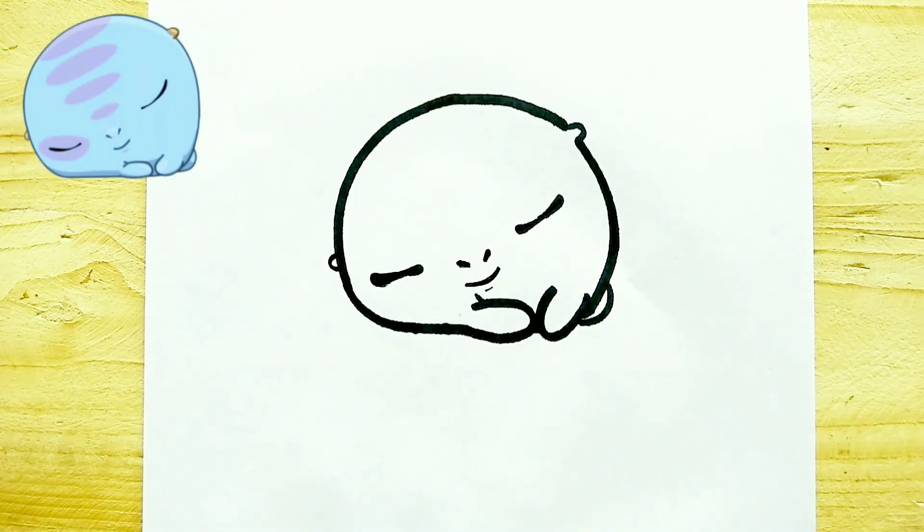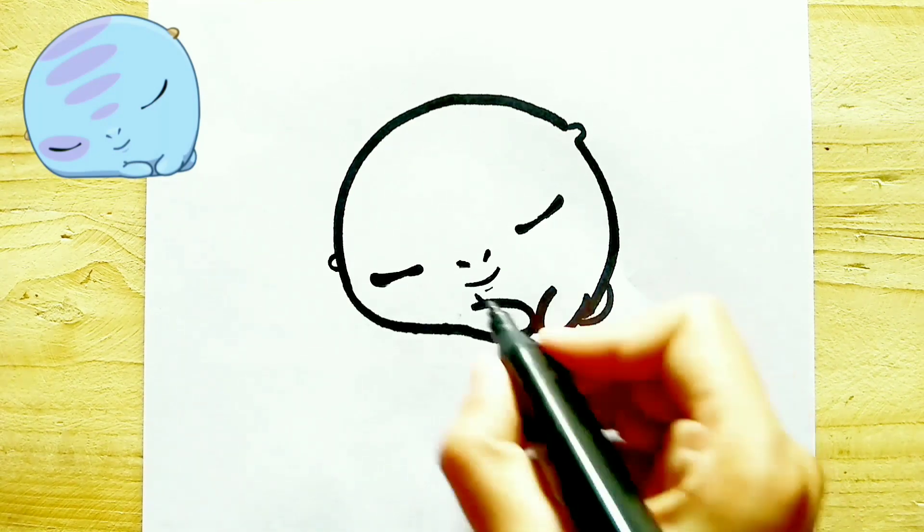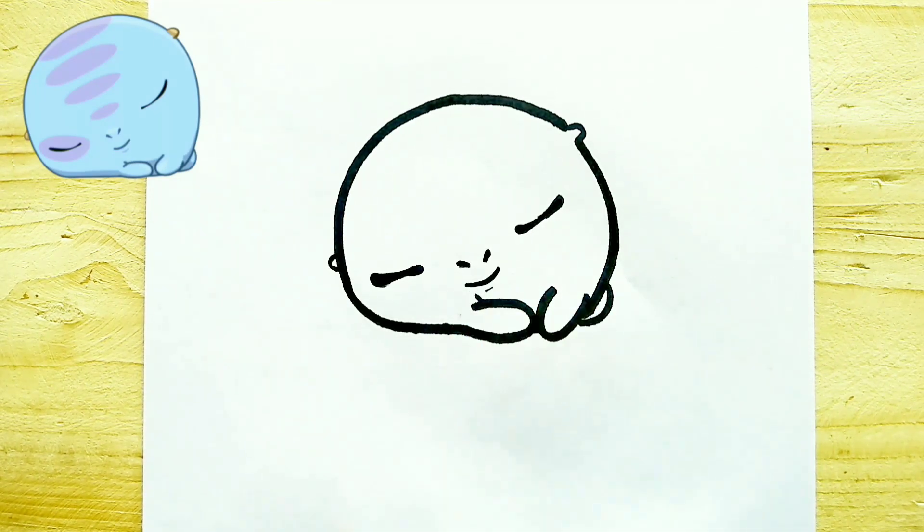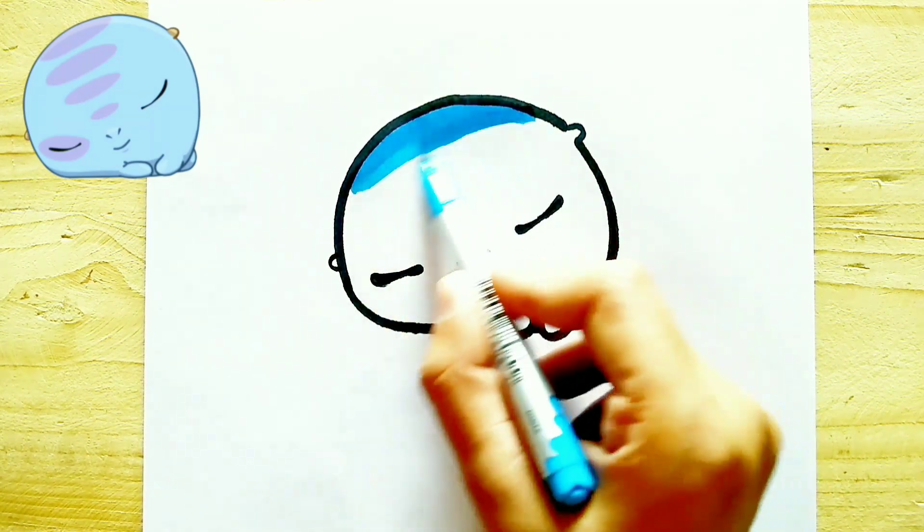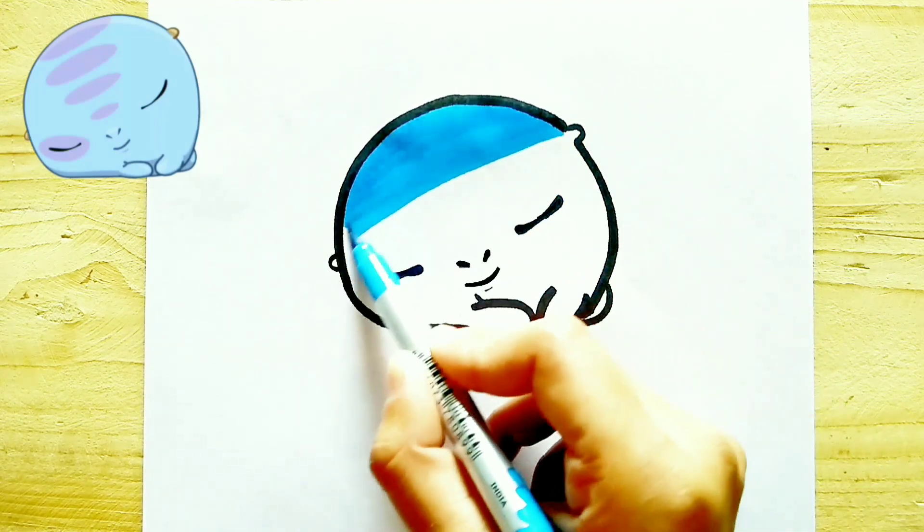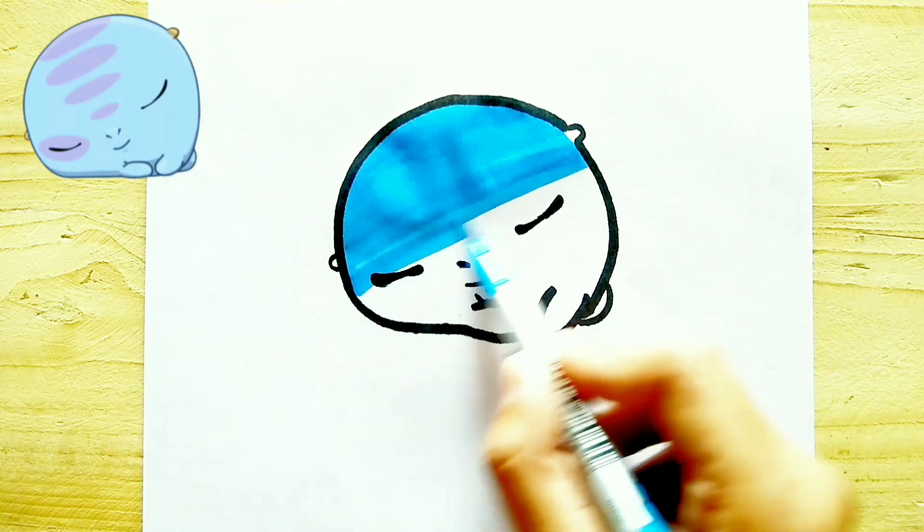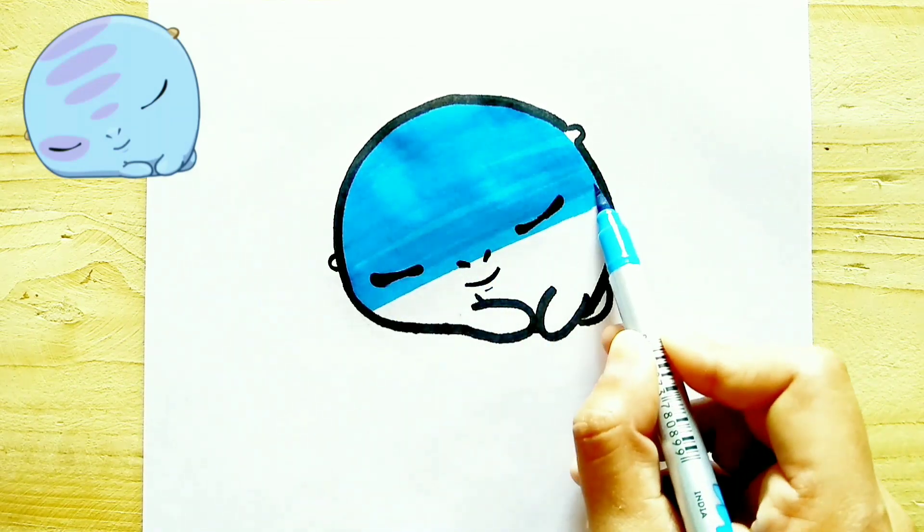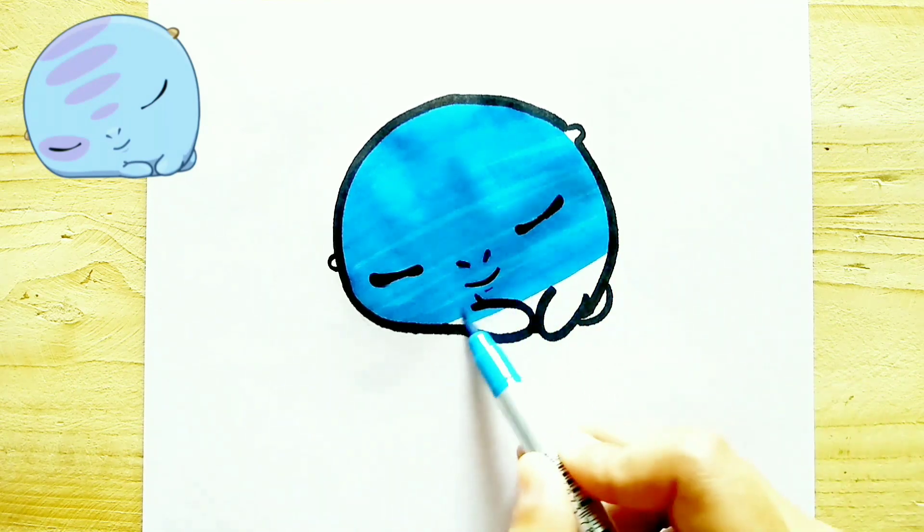So after erasing the pencil marks, I started coloring. I used first blue color because I wanted to draw it like a sticker, not the same but something like that. So I used blue color, light blue color. So satisfying.